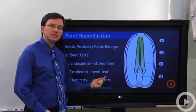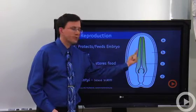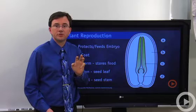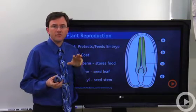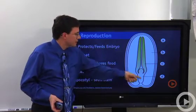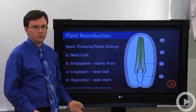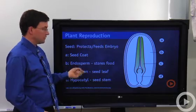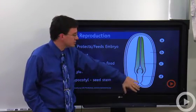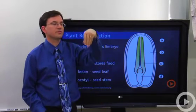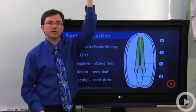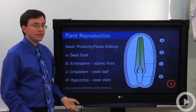The cotyledons are the first leaves used by the growing embryo as it breaks through the dirt and starts to do photosynthesis. They're often thicker and have stored food in them. Below them is the hypocotyl — which literally means 'below the cotyledon' — and this is the seed stem. When the seed starts to grow, the hypocotyl pushes up through the dirt, lifts the cotyledons up, and the plant begins to photosynthesize and grow. That's how plants reproduce.